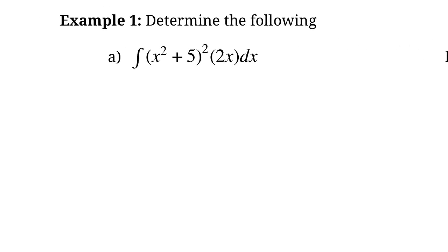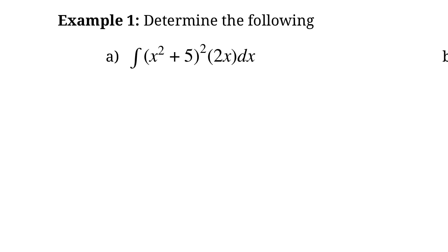Let's zoom in on Example 1. We have to integrate this. You might be thinking that the easiest way would be to distribute out the (x² + 5)², maybe distribute the 2x in so you have it in a bunch of pieces, and then take the integral of each of those pieces. You could do that, but that takes a lot of time and algebra, and you might make a mistake.